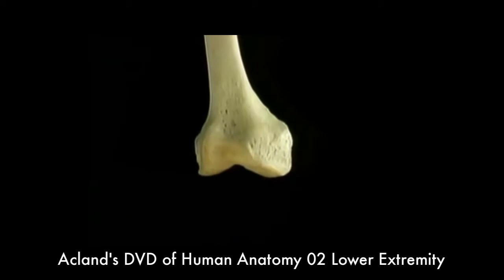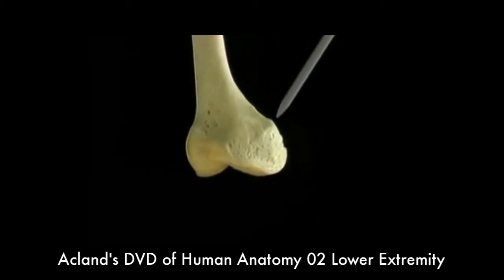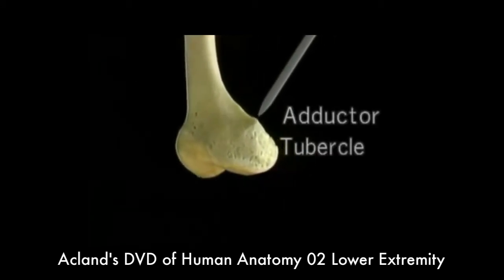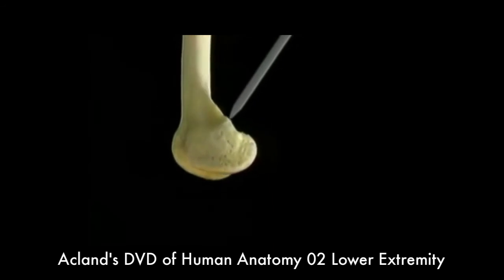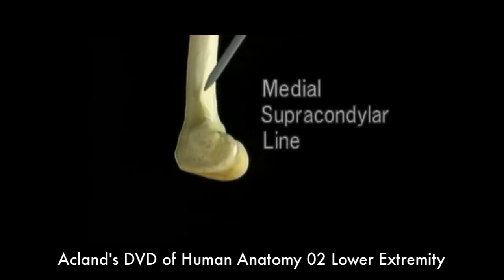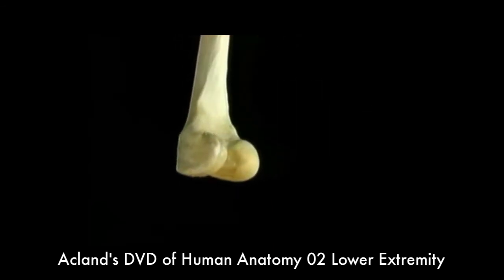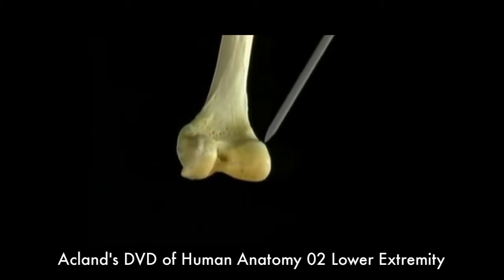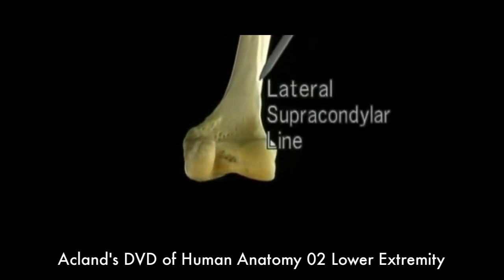The sharp corner on the medial epicondyle is the adductor tubercle. This prominent ridge is the medial supracondylar line. This one is the lateral supracondylar line.